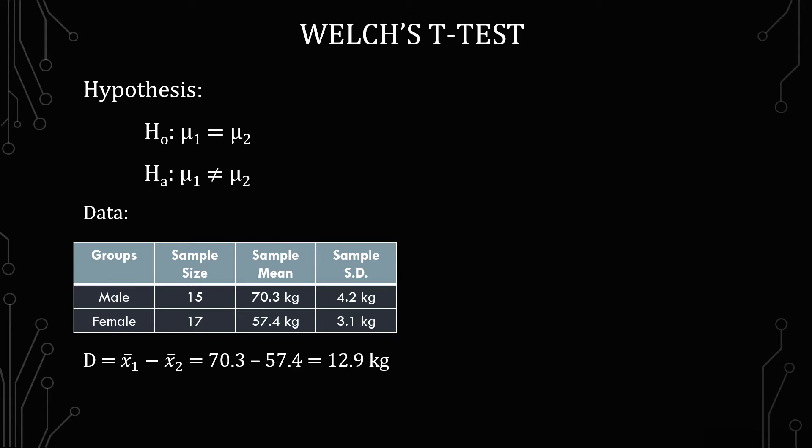The formula for the calculated t is the average of group 1 minus the average of group 2 over the square root of the standard deviation squared of the first group divided by the size of the first group plus the standard deviation squared of the second group over the second group's sample size.